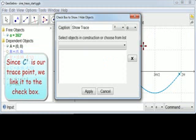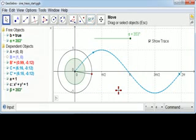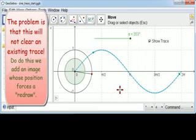And of course, we want it to show C prime, which is our tracer, if the trace is on, and to not show it if it's not. So we come down here and we choose C prime. Now that will work good, but it won't clear off the trace. So what do we do in order to clear off the trace?